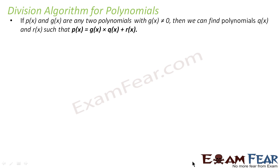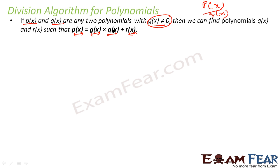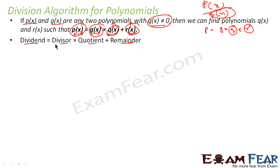If p(x) and g(x) are any two polynomials where g(x) is not equal to 0 — because if g(x) equals 0, dividing becomes infinite — then we can find q(x) and r(x) such that p(x) = g(x)·q(x) + r(x). Here q is the quotient and r is the remainder, just like Euclid's formula: p = g·q + r. So p(x) is the dividend, g(x) is the divisor, q(x) is the quotient, and r(x) is the remainder.